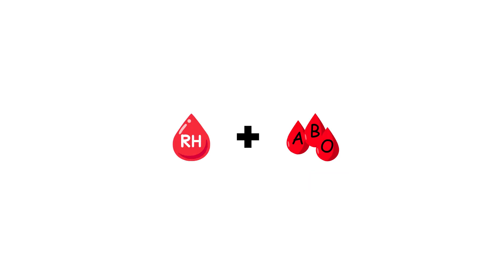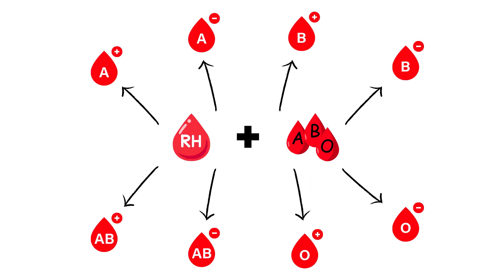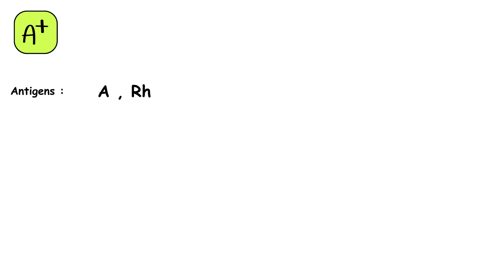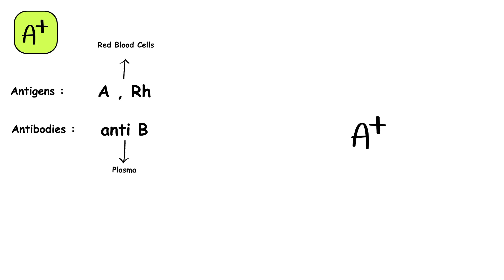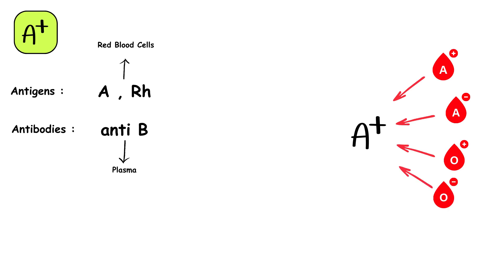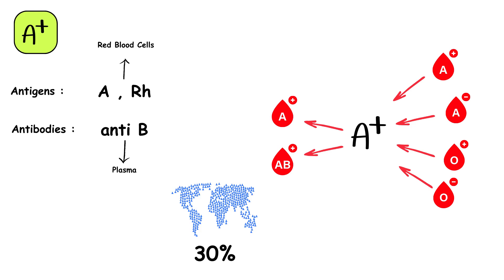By combining the ABO and RH systems, eight blood types are created. A positive blood type has A and RH antigens on the red blood cells and anti-B antibodies in the plasma. Individuals with A positive blood can receive donations from A positive, A negative, O positive, and O negative blood types. They can donate blood to other A positive and AB positive individuals. Approximately 30% of the global population has A positive blood, making it one of the most common blood types.